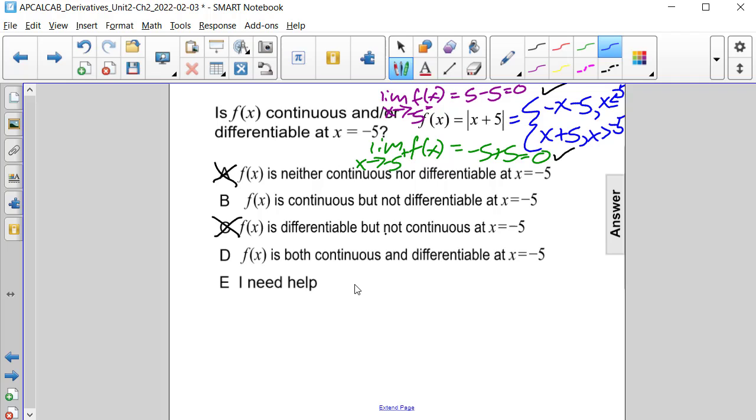Now we need to determine what f prime of x is in order to find the slope of the tangent lines to see if they are equal to one another. So if we take the derivative of the top section, we will get negative 1 for x values less than or equal to negative 5. And it will be positive 1 for x values greater than negative 5.